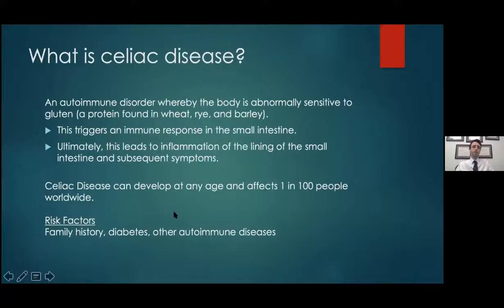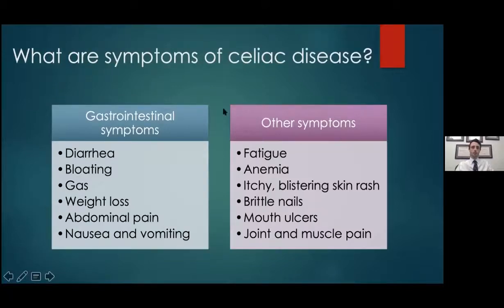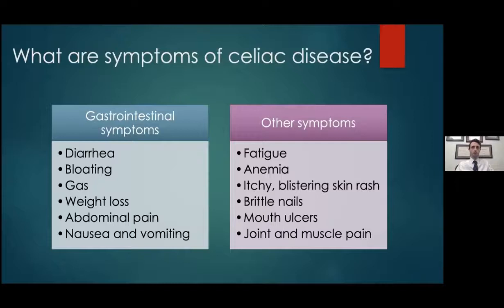Risk factors for celiac disease include family history of celiac disease, diabetes, or other autoimmune problems. Symptoms can be many. Extra-intestinal manifestations include rashes, nail changes, and joint pains. GI symptoms are mostly abdominal discomfort, abdominal pain, bloating, and diarrhea — you don't have to have all of them. Nausea, vomiting, and general malaise are also associated with celiac disease.